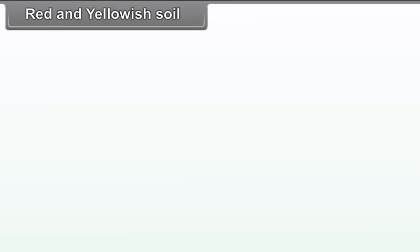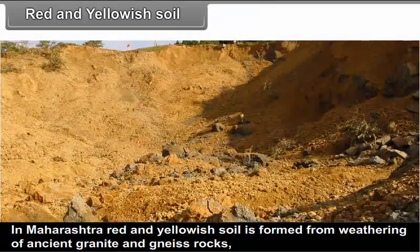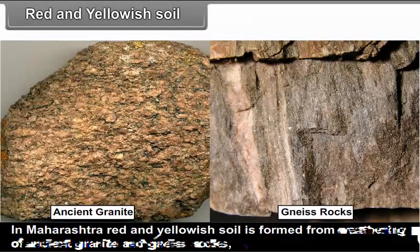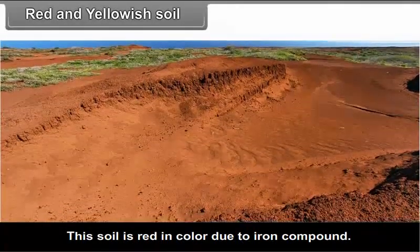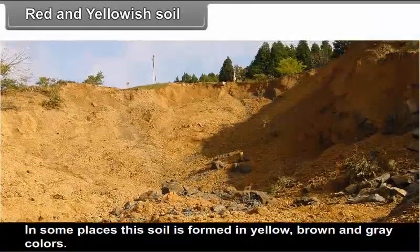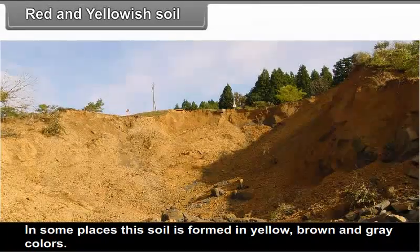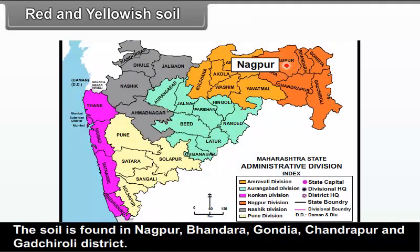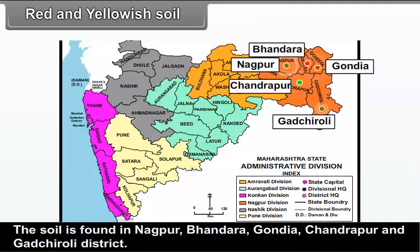Red and yellowish soil: In Maharashtra, red and yellowish soil is formed from the weathering of ancient granite and gneiss rocks. This soil is red in color due to iron compounds. In some places, this soil is found in yellow, brown and grey colors. The soil lacks phosphoric acid, organic matter, lime and nitrogen. It is found in Nagpur, Bhandara, Gondiya, Chandrapur and Gadchiroli districts. Crops like bajra, groundnut, potato and rice grow well in this soil.